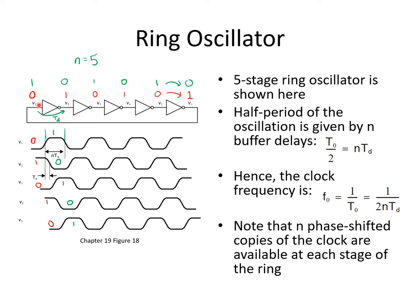A neat property of the ring oscillator is that it produces not just one oscillating waveform, but in fact N oscillating waveforms. In this case, there are five oscillating waveforms, one at the output of each inverter. Moreover, assuming the inverters are well matched, these five clock waveforms have uniformly spaced phases, essentially giving you clock phases evenly spread over the full range of 2π radians. This can be very useful in some applications.